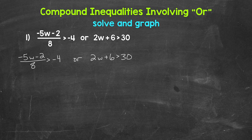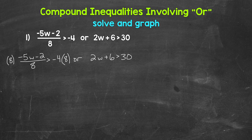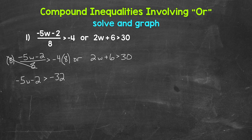Let's start by solving negative 5w minus 2 over 8 is greater than negative 4. We need to isolate the variable w. We need to start by undoing the division by 8 — the inverse operation of division is multiplication. So let's multiply both sides by 8. The 8s on the left cancel each other out, so we have negative 5w minus 2 is greater than negative 4 times 8.